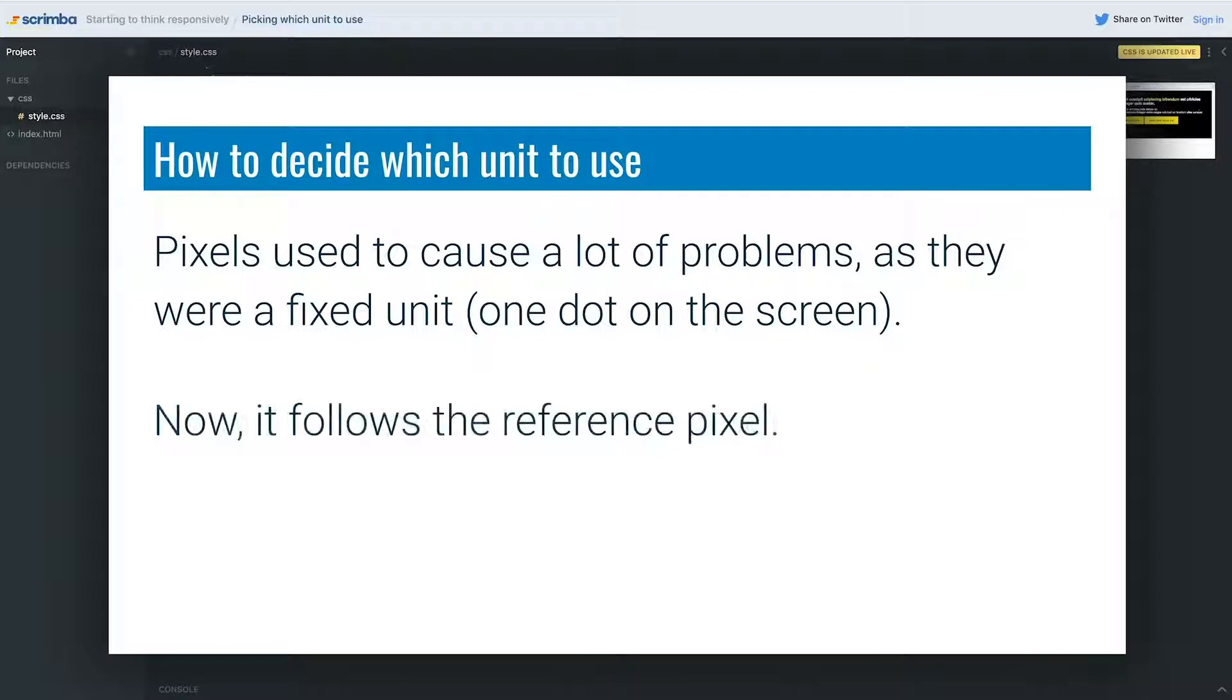It now follows what we call the reference pixel. A reference pixel is a fixed size, and they had to come up with a solution because we started getting these devices that were different resolutions. So imagine if you had a retina display and a regular display and you set something to 18 pixels - it looked fantastic on your normal screen, but on that retina display it would be half that size and just be really small.